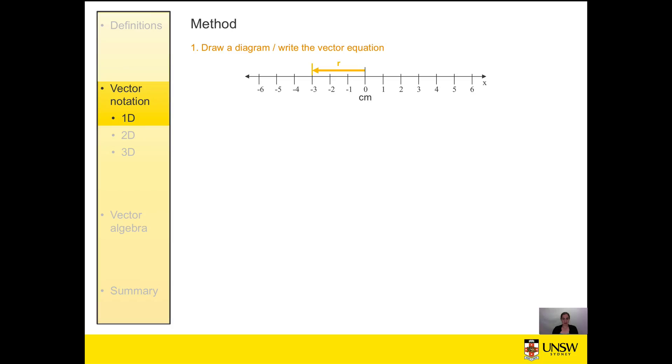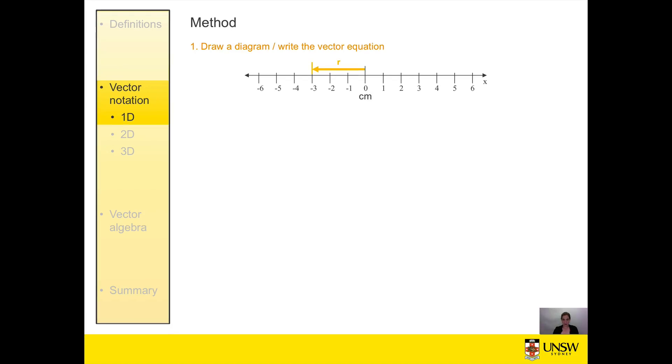Our first example is a one dimensional vector. In this case, step one is to write the vector equation, and we can do that by reading straight from the diagram. We can see that our vector magnitude is 3 cm and it's pointing in the negative x direction or the minus i direction. So that would give us a vector equation of r equals minus 3i.